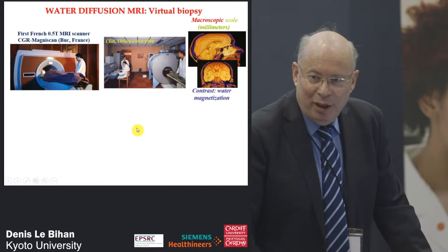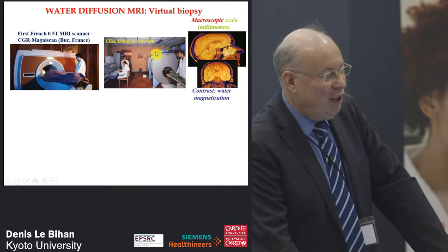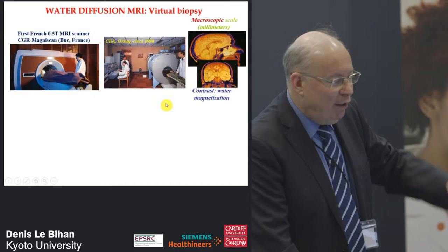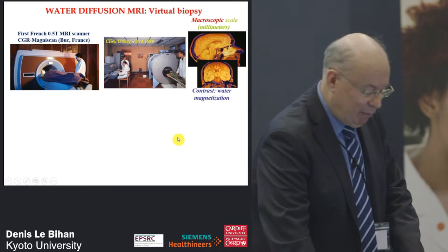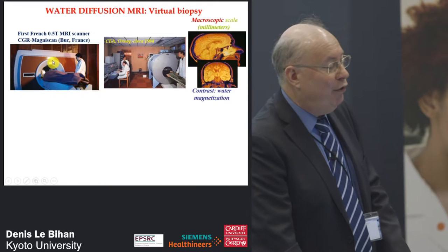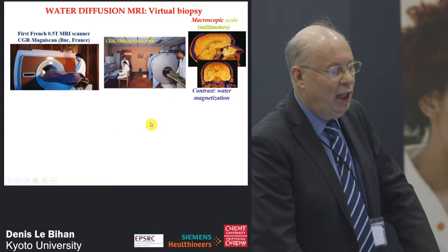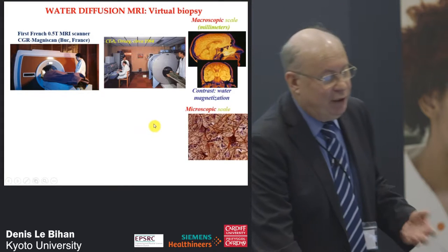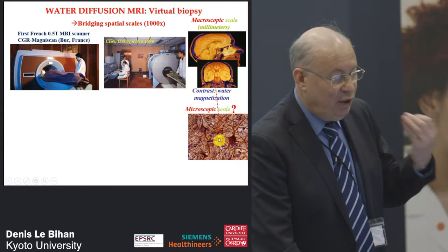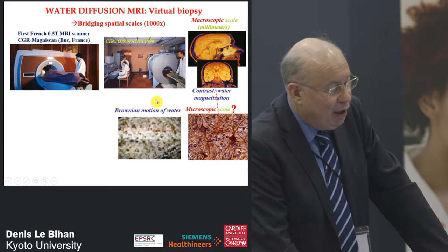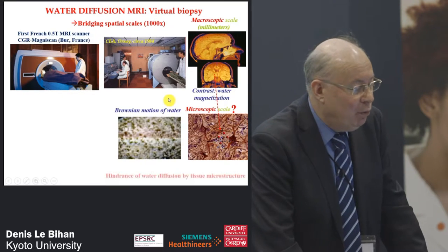Derek asked me to show some old slides — this is me in 1984. I was working at the CEA, I was a medical student and physics student. I was very lucky to have access to the very first MRI scanner in France, from the company CGR. My question was: could we get information about the structure of tissue? Could I make a virtual biopsy of the brain? My idea was that if we consider the Brownian motion of water in tissues, water molecules could be seen as spies to tell us about the microstructure.